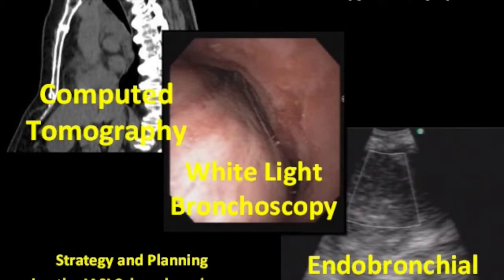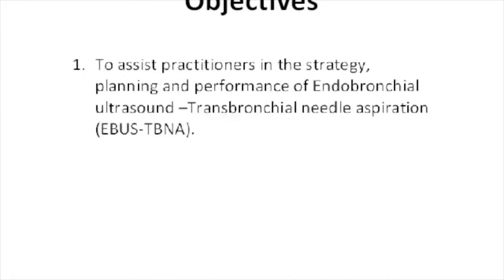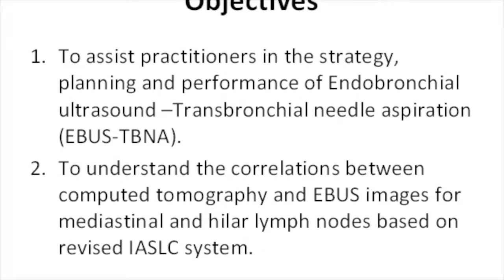This lesson explains the use of a specially designed teaching tool and the lymph node map adopted by the International Association for the Study of Lung Cancer. The objectives are to assist practitioners in the strategy, planning and performance of EBUS TBNA, and to help practitioners understand the correlations between chest computed tomography, EBUS, and white-light bronchoscopy for sampling mediastinal and hilar lymph nodes.